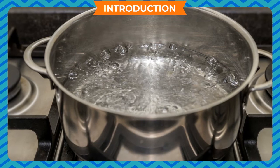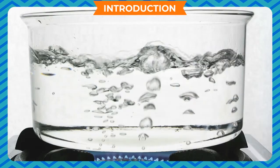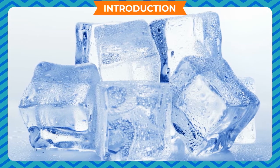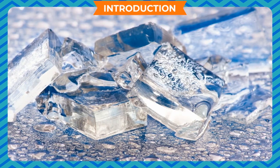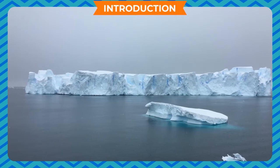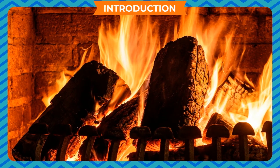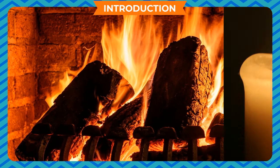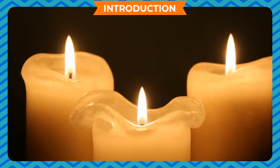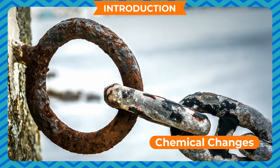We are aware of changes in which the chemical composition of a substance is not affected. Such substances change only outwardly — there is a change in their physical state, but no permanent change. Such temporary changes are called physical changes. There are still another type of changes which are permanent in nature, in which the chemical composition of a substance is affected and totally new substances are formed. Such changes are called chemical changes.